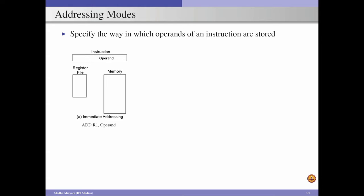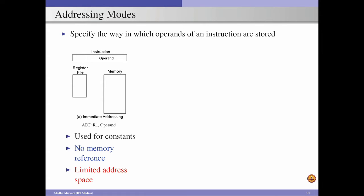A typical example of immediate addressing is ADD r1, operand, where the operand is a constant value the instruction is using. This addressing mode is typically used for accessing constants. The main advantage is there is no need for a memory reference because the value required by the instruction is directly available in the operand field. The disadvantage is the limited address space, because a typical instruction consists of few bits and some bits are already allocated for the opcode, leaving very limited bits for the operand field.